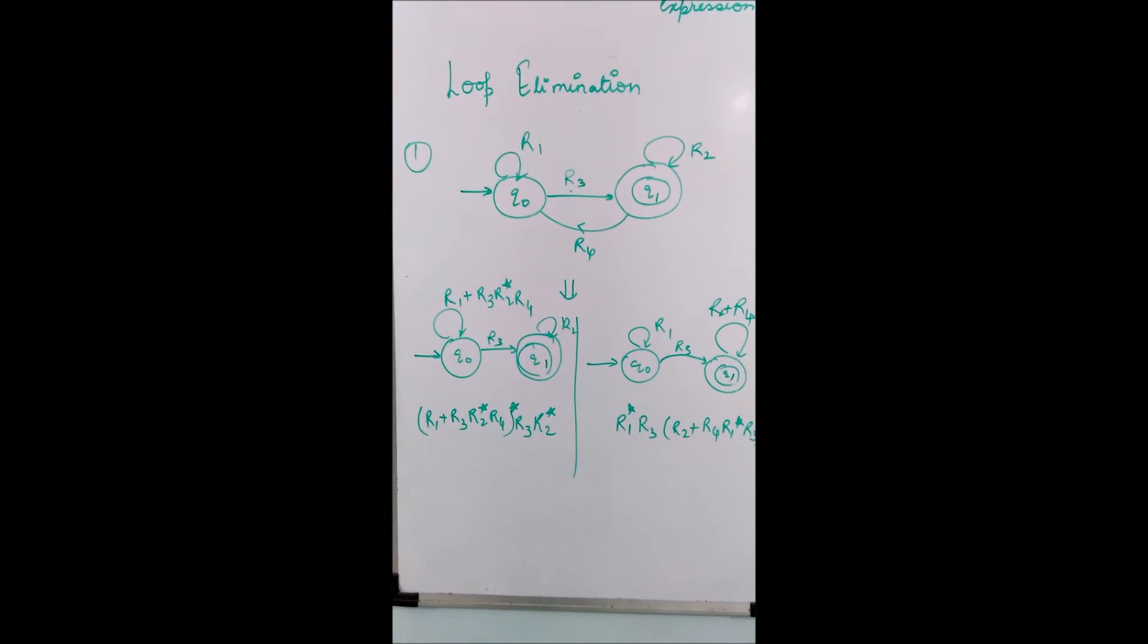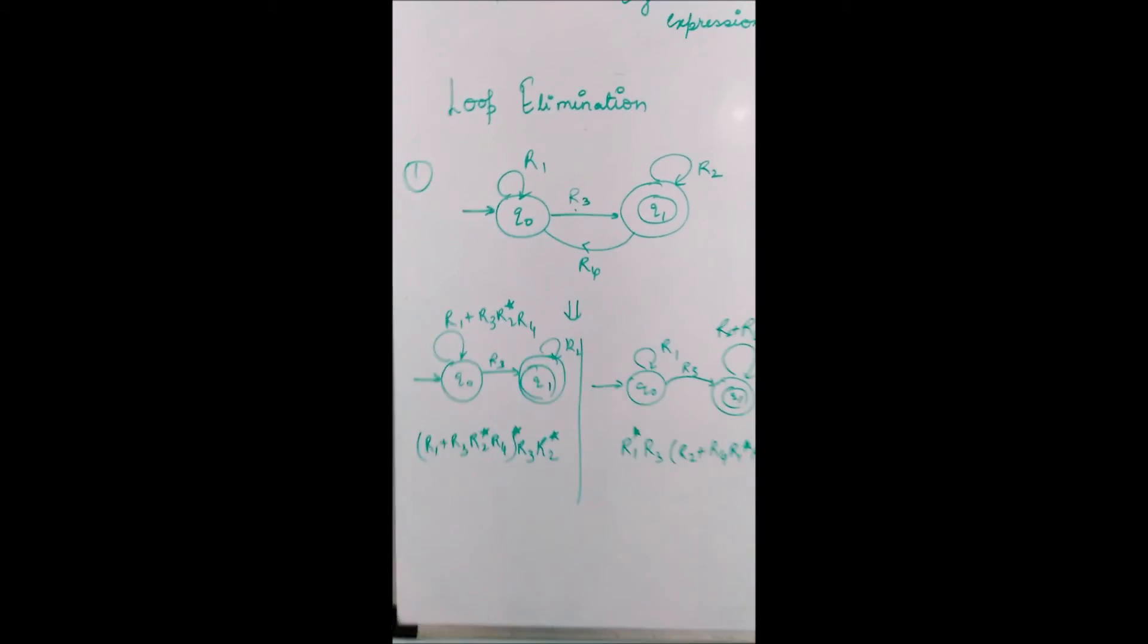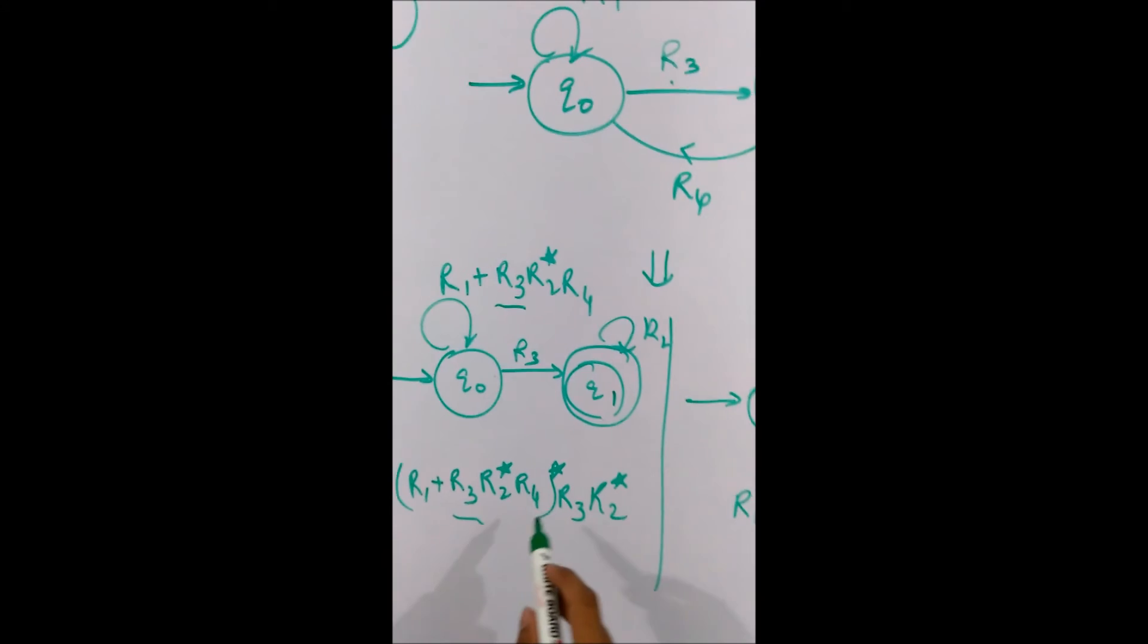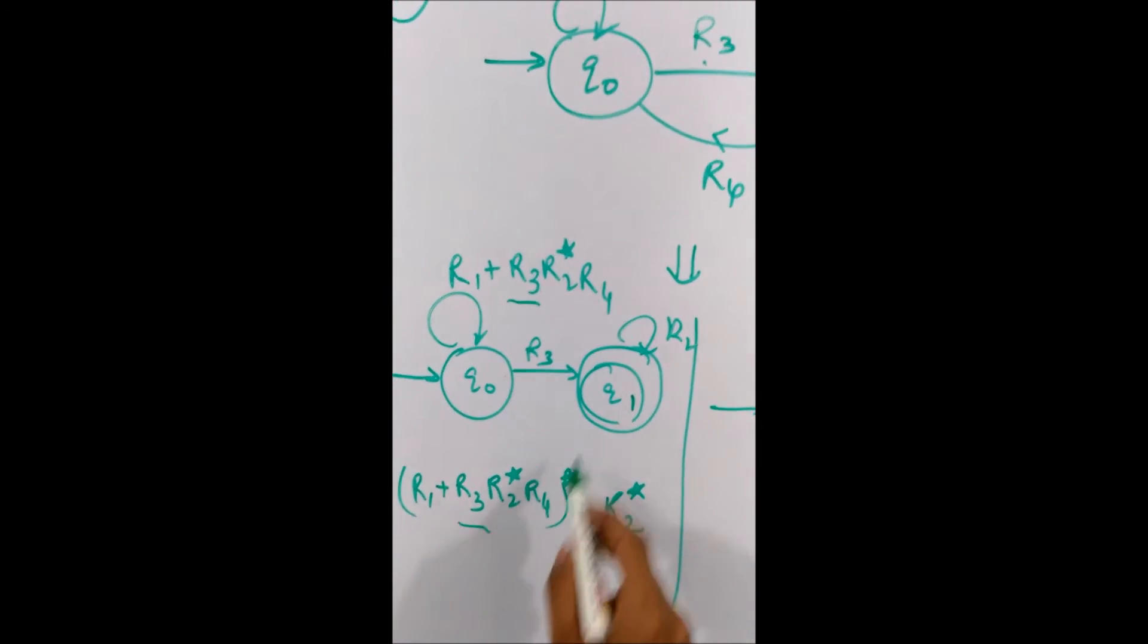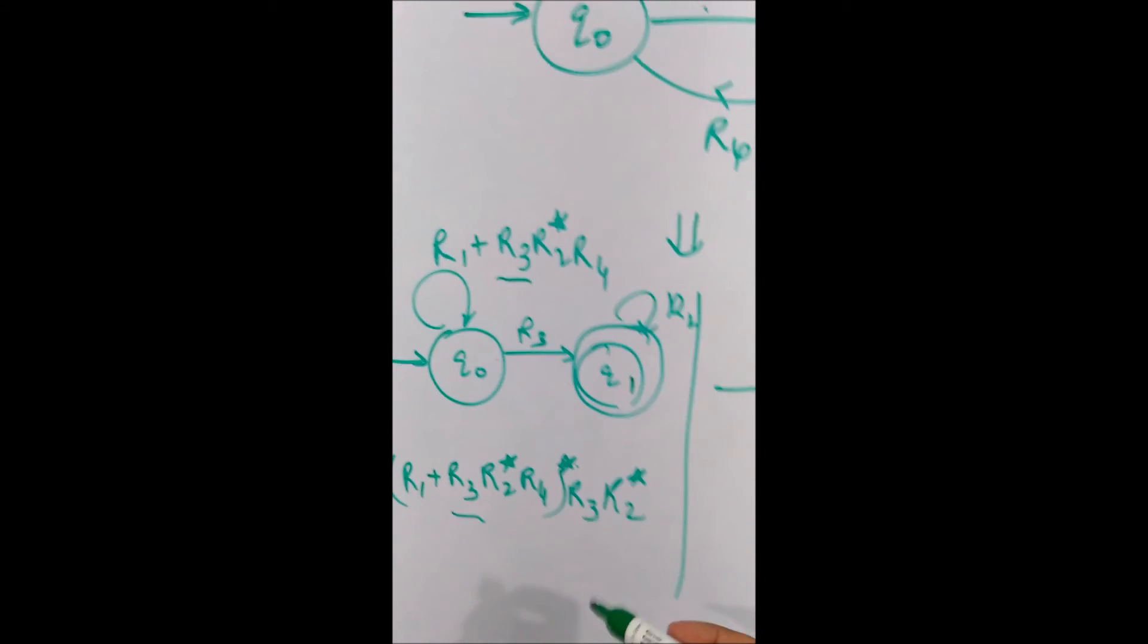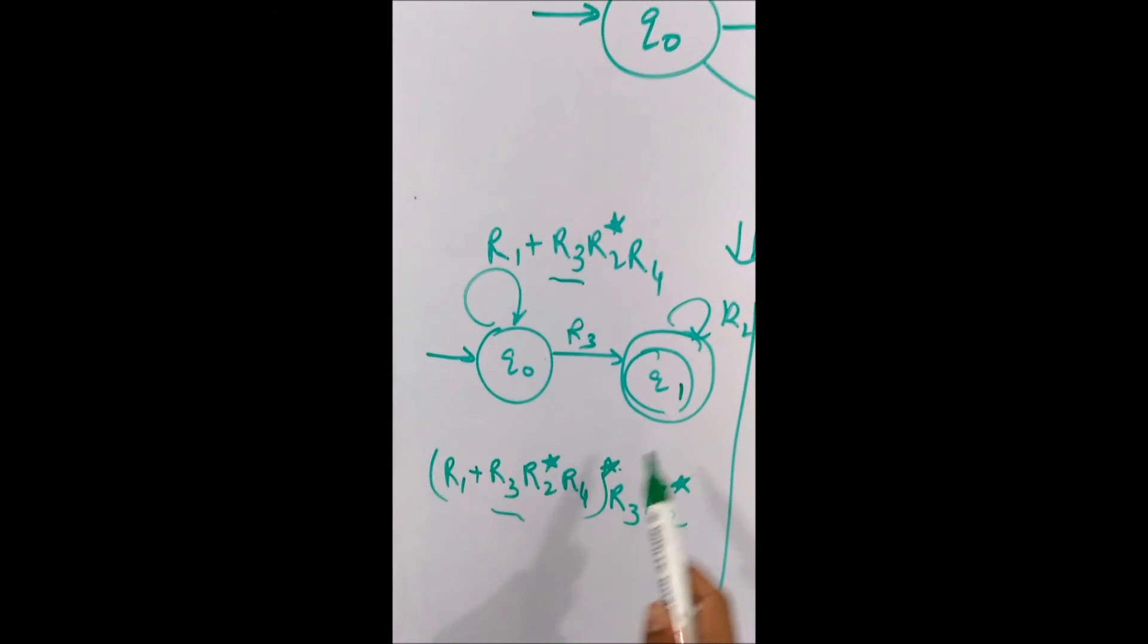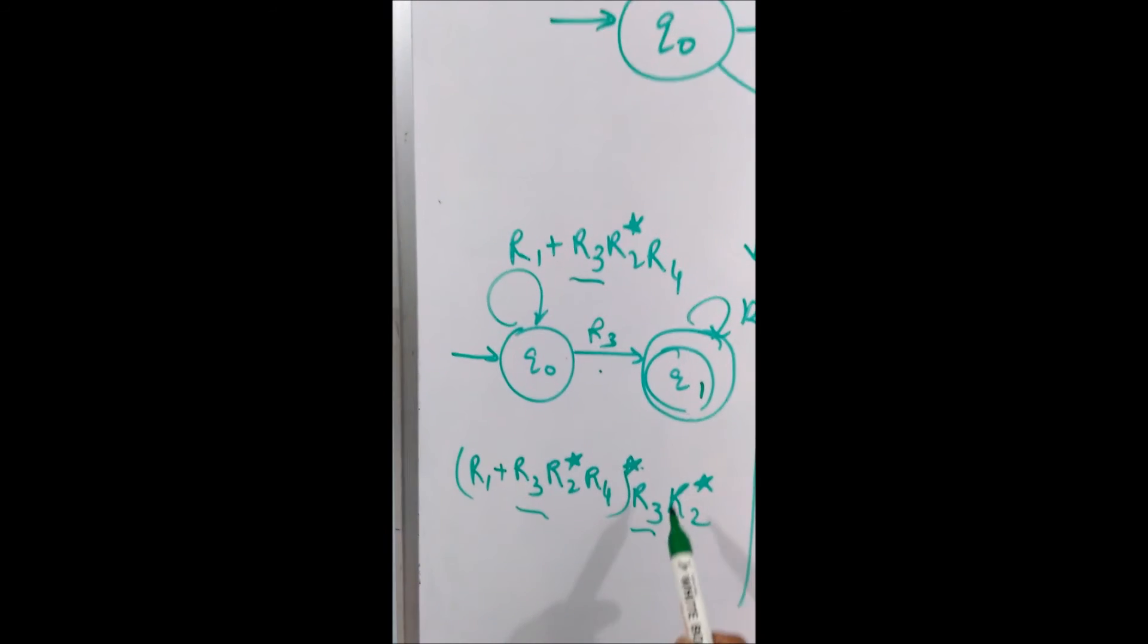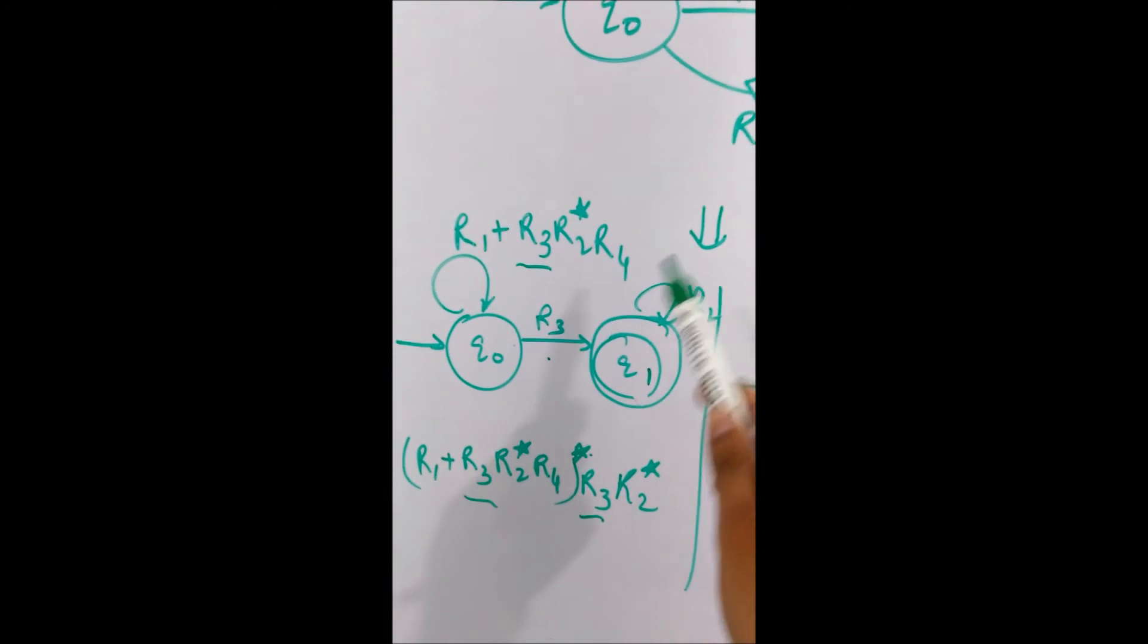It will be the loop. We will write that loop first and then we will mark a star because it can occur more than once.